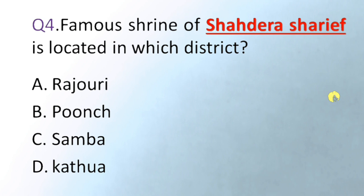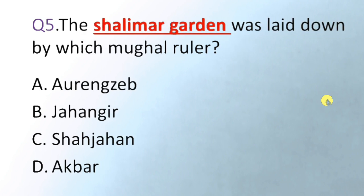Our next question is: the Shalimar Garden was laid down by which Mughal ruler? Option A Aurangzeb, B Jahangir, C Shah Jahan, D Akbar. The correct answer is Jahangir — the Shalimar Garden was laid down by Jahangir.